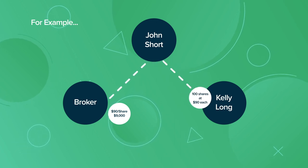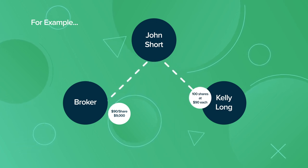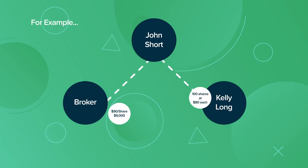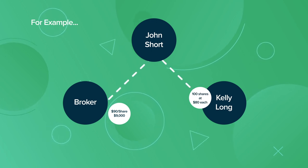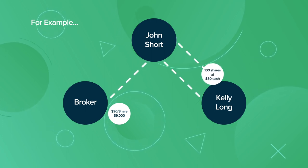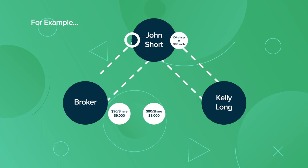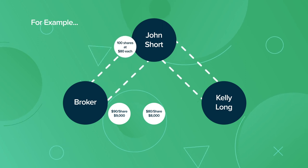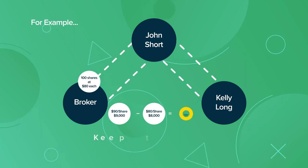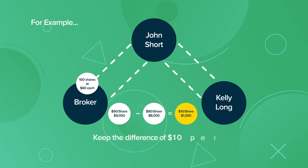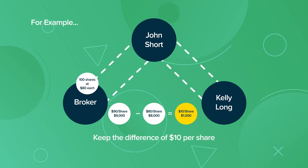The shares decrease in price to $80, allowing John to purchase the shares back from Kelly for only $80 each, give the shares back to the broker, and keep the difference of $10 per share.